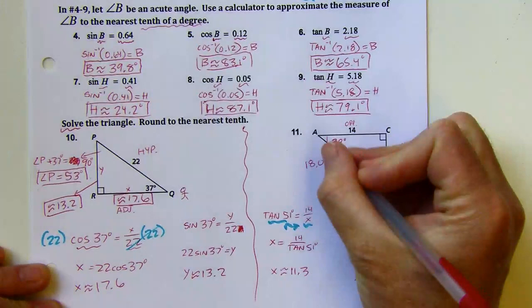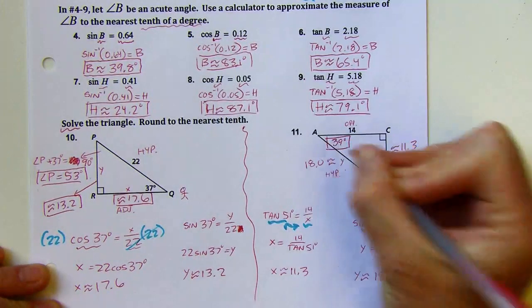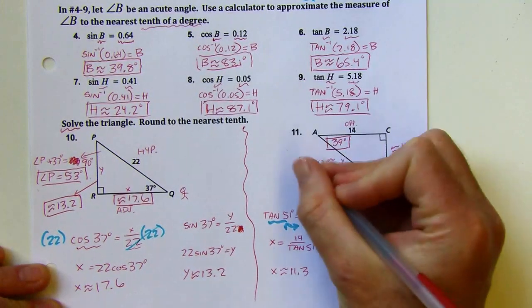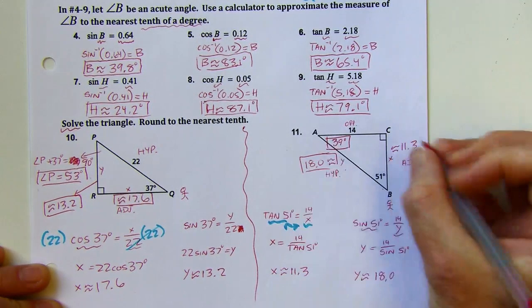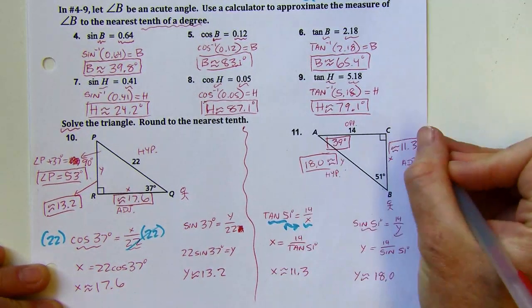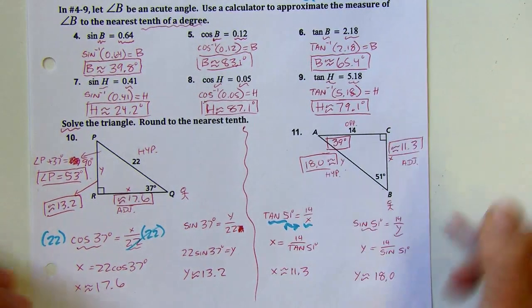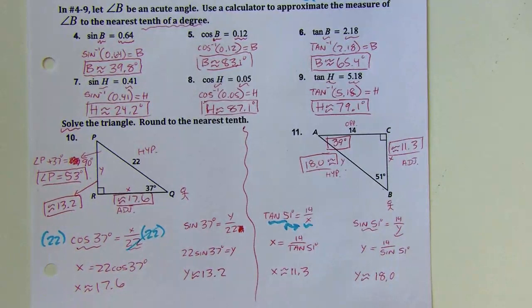My actual answers are the measure of the missing angle — 39 degrees — and the two missing sides. Now I have everything and the triangle is solved. Okay, and that's it. Thank you.